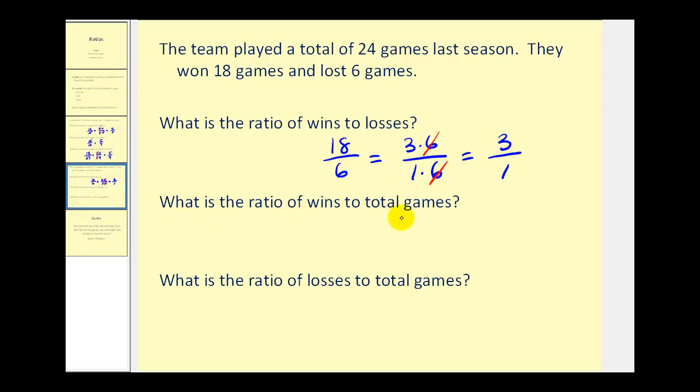Next, what is the ratio of wins to total games? Well there's 18 wins, and the total games would be 18 plus 6 or 24.